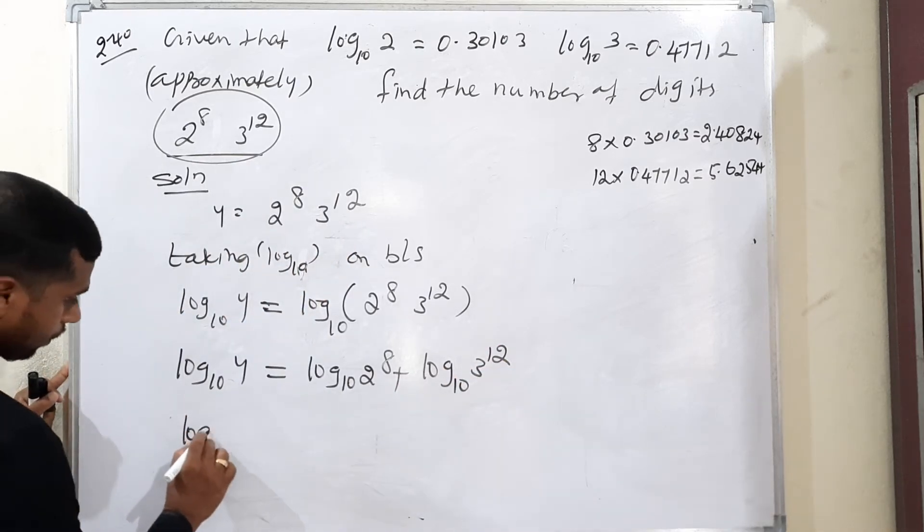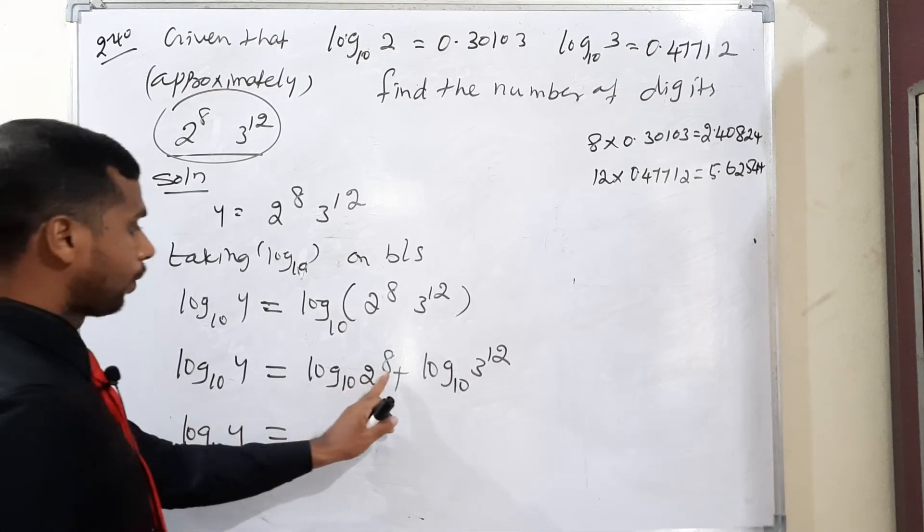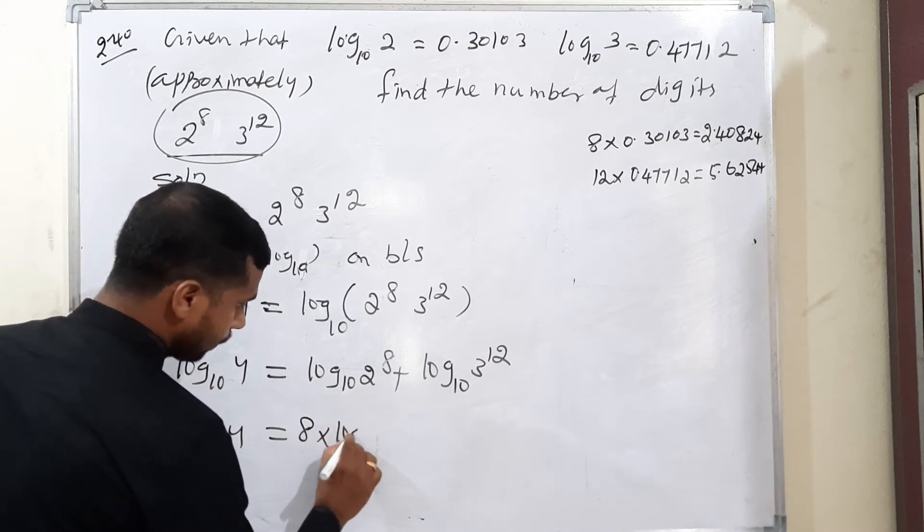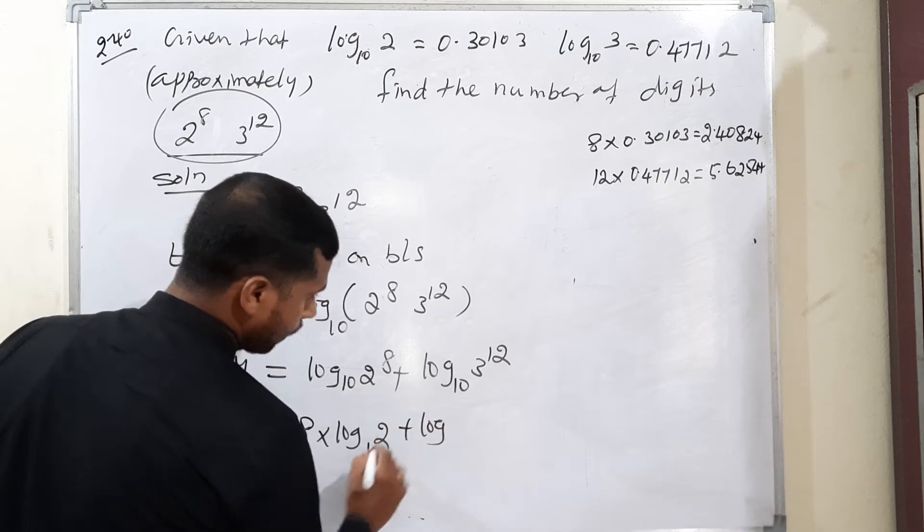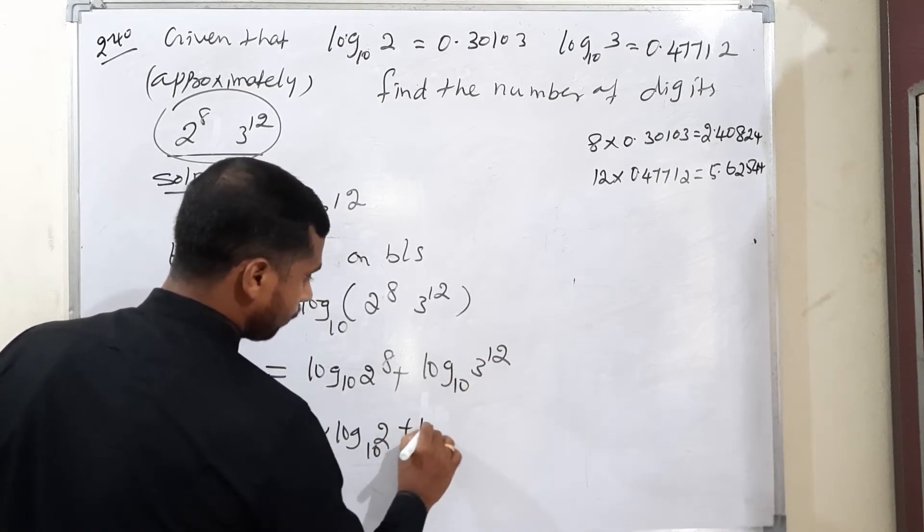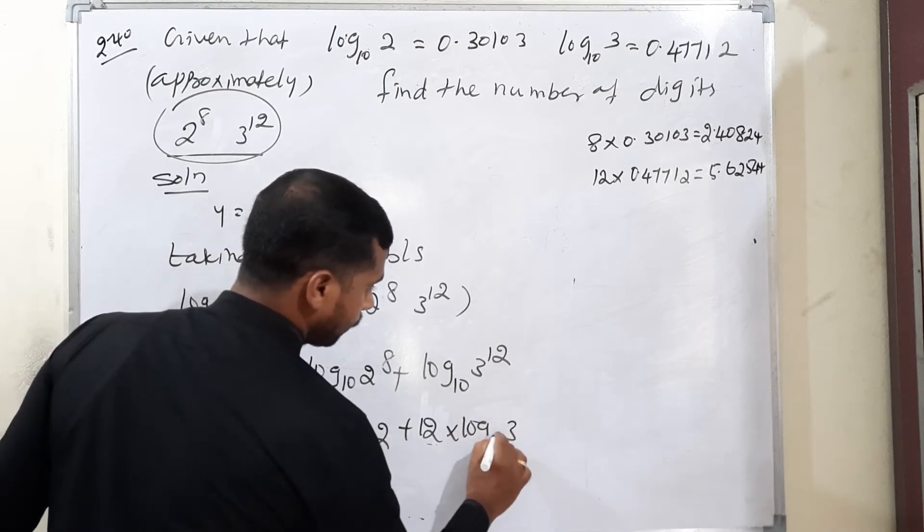Next line, log y base 10 is equal to power rule, bring the power to the front level. Therefore, 8 into log 2 base 10 plus 12 into log 3 base 10.